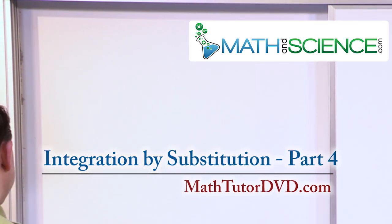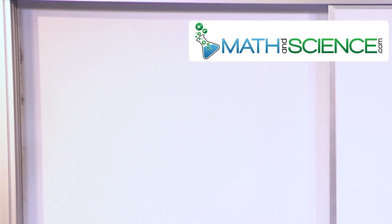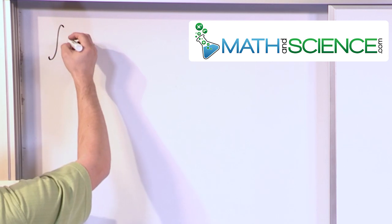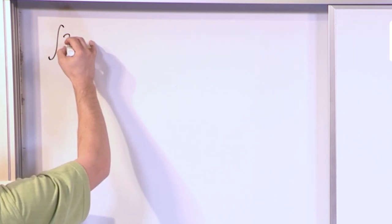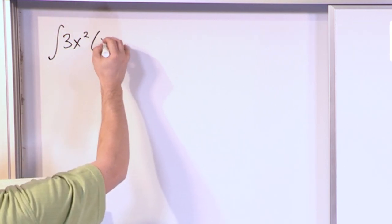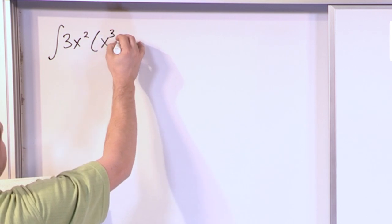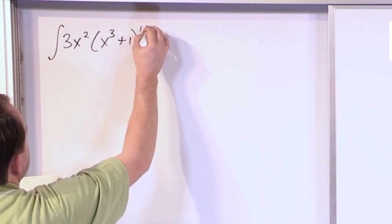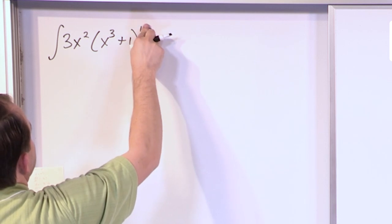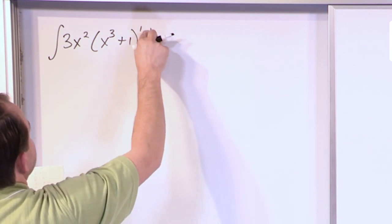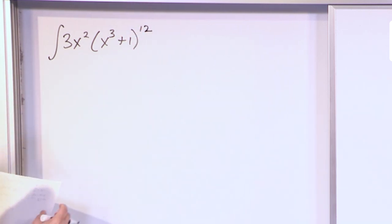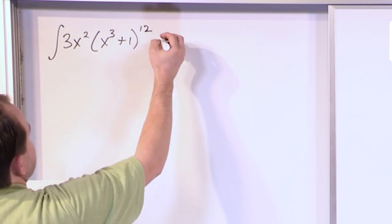We'll also do some definite integrals in this section. Let's start with an integral that looks like this: 3x squared times (x cubed plus 1) all raised to the 12th power, dx.